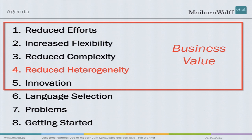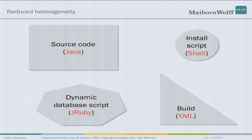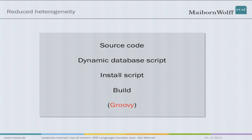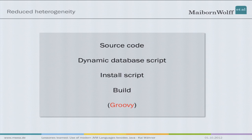The fourth business value is reduced heterogeneity. Usually in projects we have Java source code, install scripts via shell, dynamic database scripts via JRuby or another language, and a build with Ant in XML — many different languages to learn. What we try to do is use as few languages as possible. You can do all of this in Groovy, for example. We like to use Groovy for builds and also for install scripts, since Groovy can be used for scripting. If all your code is in one language, it's much easier to maintain. If you write business logic and then look at your build system, it's much easier if it's the same language.